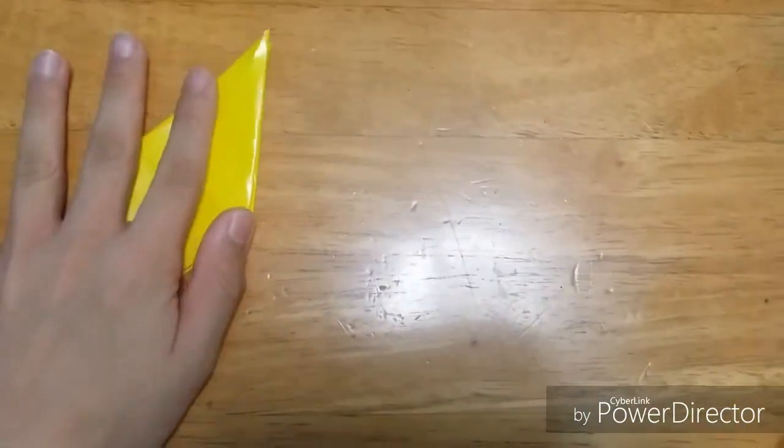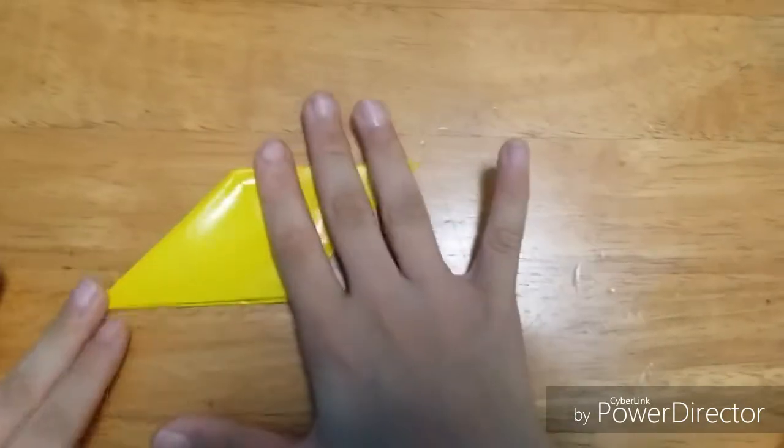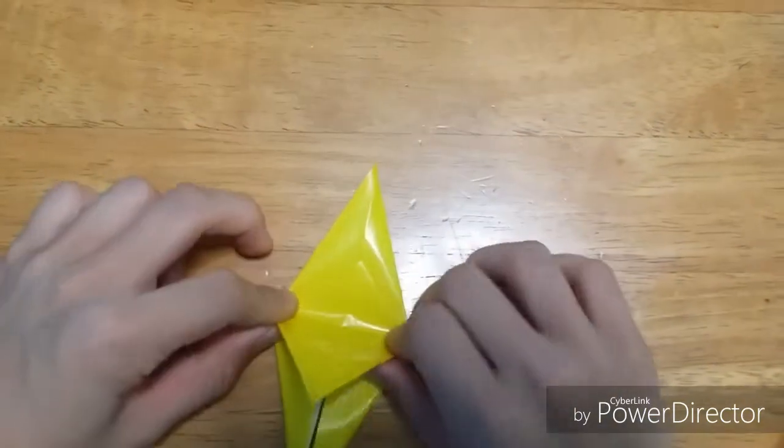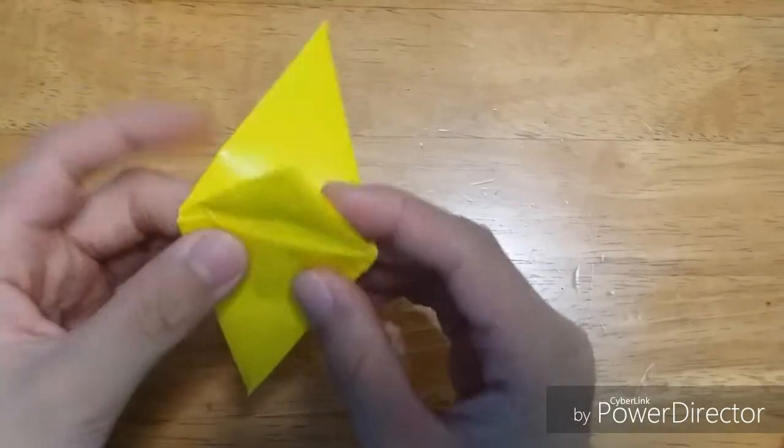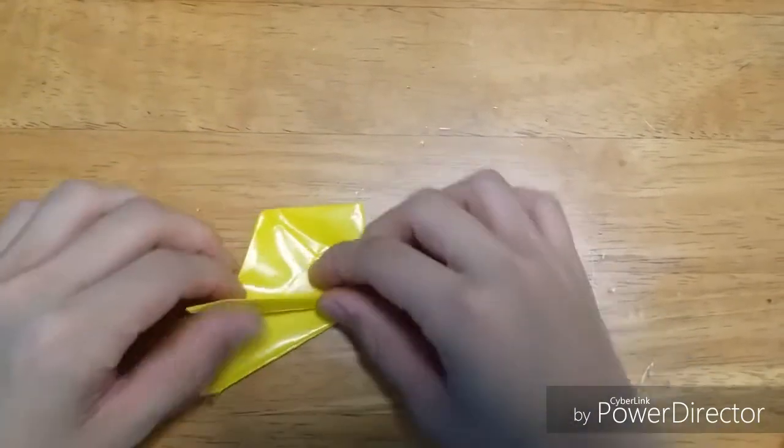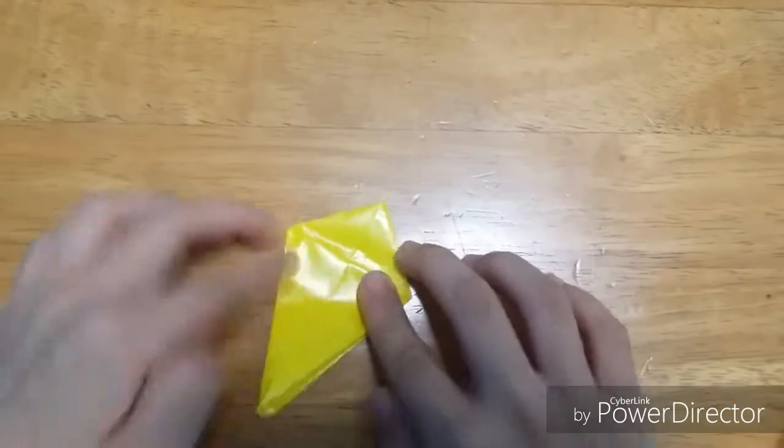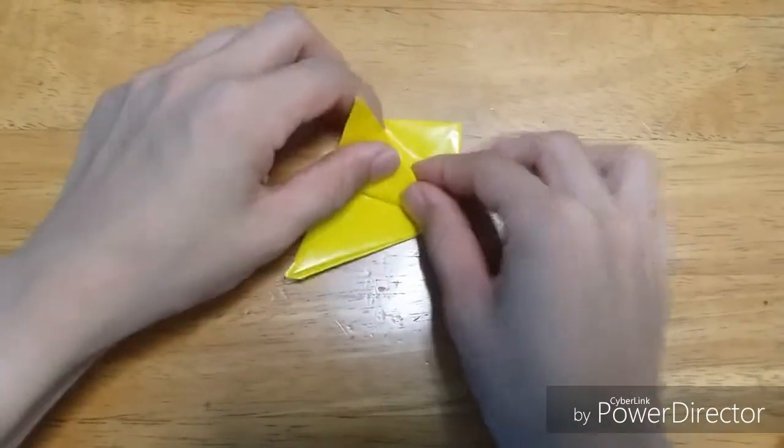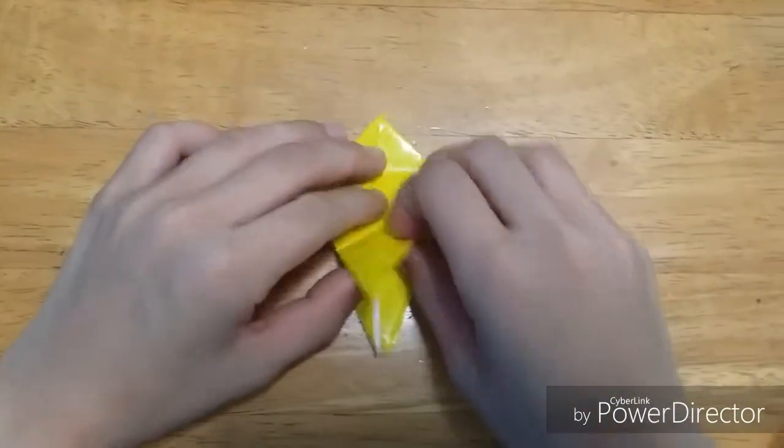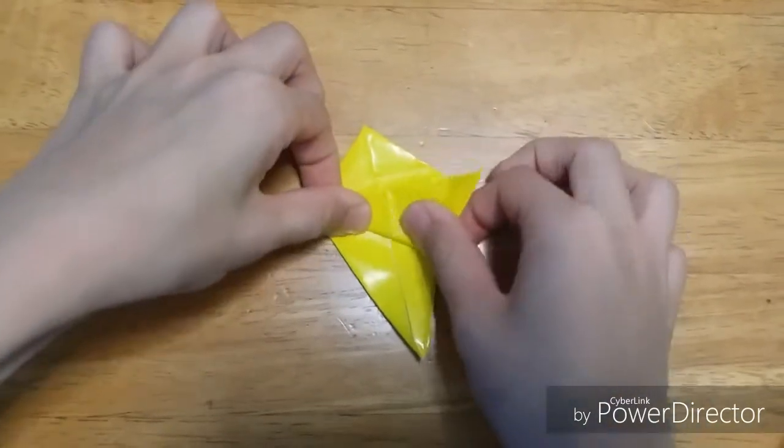So I'm gonna start by folding a bird base, a yellow one. Then fold this flaps down. Then do a rabbit's ear fold up to this crease over here. So you just fold it like that up to this crease and fold and do the same thing.